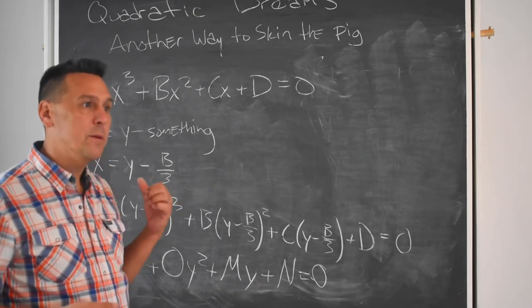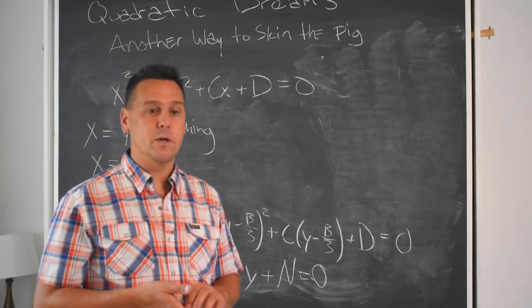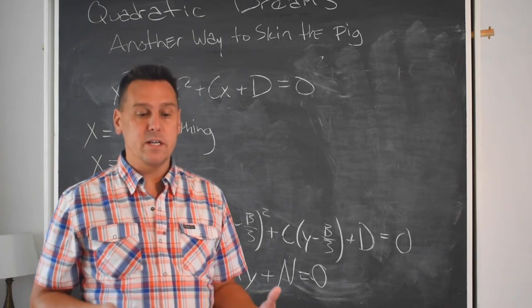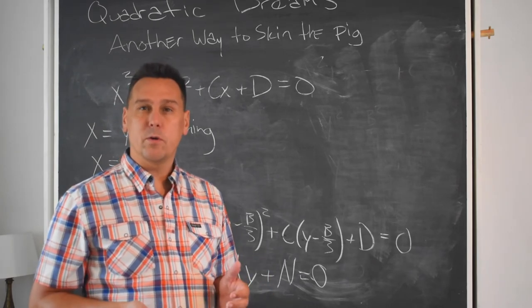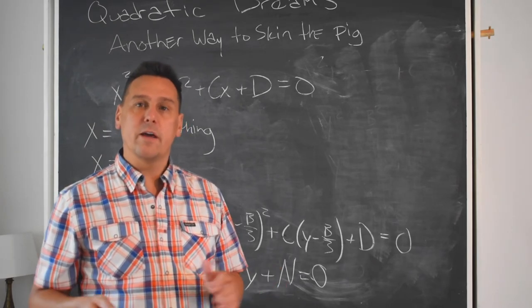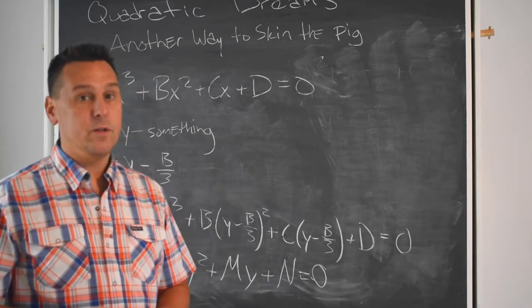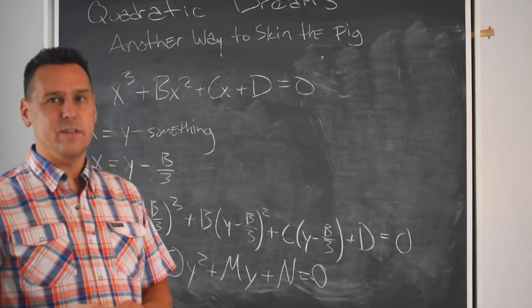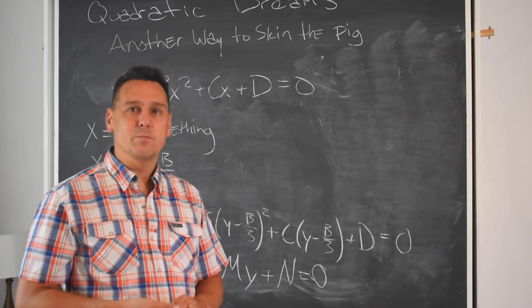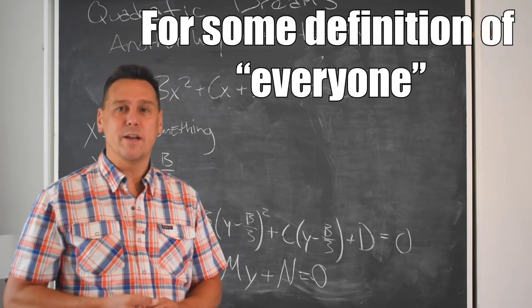And from way back in the first episode of anatomy of algebra, we learned that in 1494, Luca Pacioli said, no one will ever learn how to solve this general cubic. It was only a few years later, well, 50 years later, that Cardano published his book, at which point everyone knew how to solve the cubic.